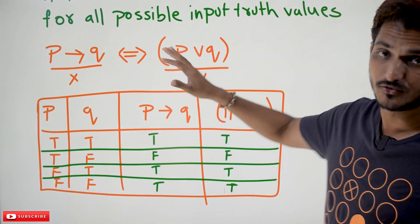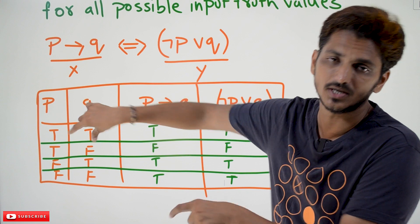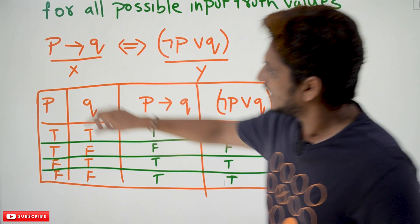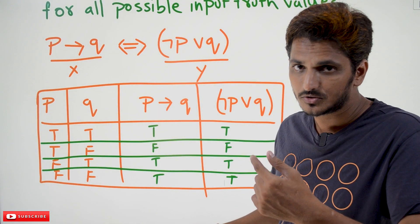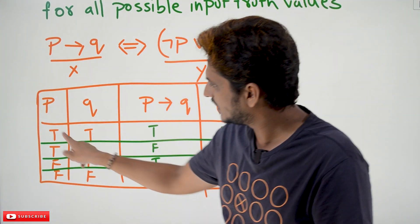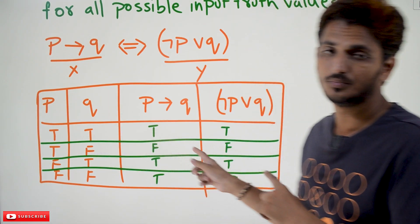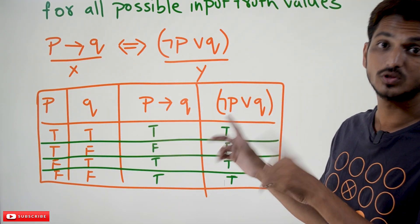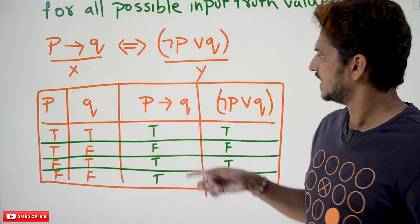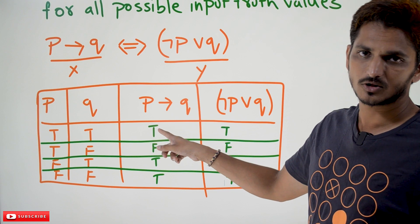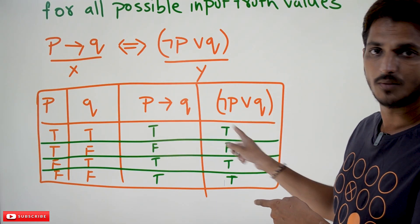So, if you take any of the input truth value possibilities. Let us take P, Q. What is the first input truth possibilities? T and T. For this, the output should be same for both the values, for both the propositions. Means P implies Q, what is the output? True. For negation P or Q, what is the output? True. Both are same.